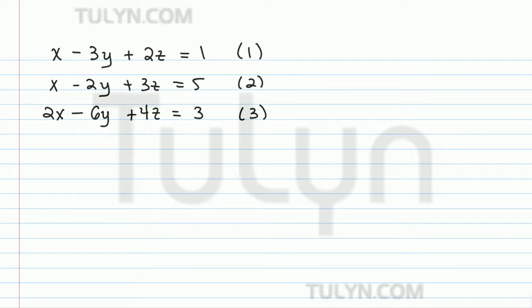Now notice that if I take equations 1 and 2, and if I multiply equation 1 by negative 1, then we're going to get a negative x up here, and when you add it to the positive x from equation 2, the x's are going to cancel out. So let's do that.